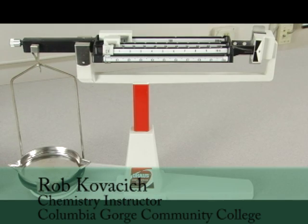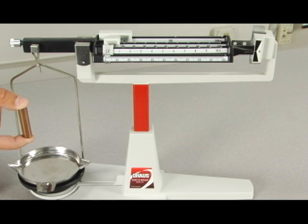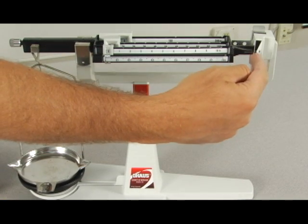This triple beam balance reads to three decimal places, which is important to remember. We're going to be massing out this copper rod. The balance itself is leveled out.